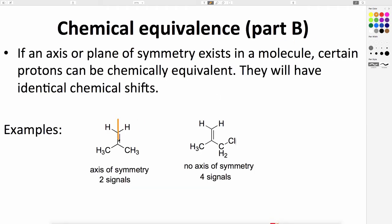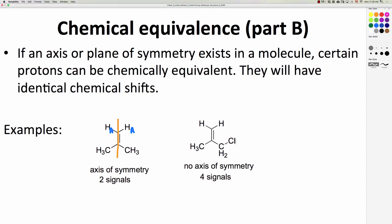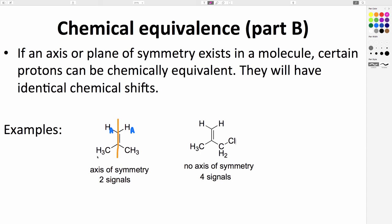The next idea for chemical equivalence occurs when we have a plane of symmetry in the molecule. For example, this alkene has a plane of symmetry that cuts right down the middle. So the proton on the left is chemically equivalent to the proton on the right. We can call them both HA. Similarly, the protons on the left-hand methyl are chemically equivalent to the protons on the right-hand methyl. They're all sitting in the same chemical environment. We can call them HB. So for this spectrum, we expect to see two signals, one for HA and another for HB.